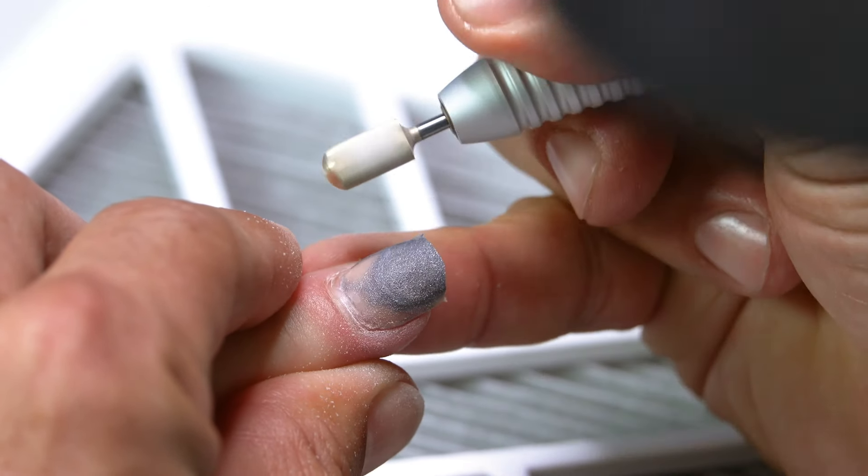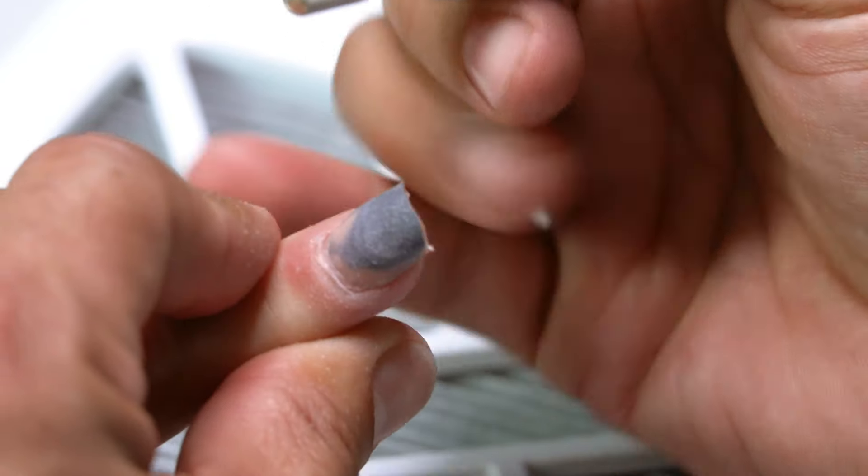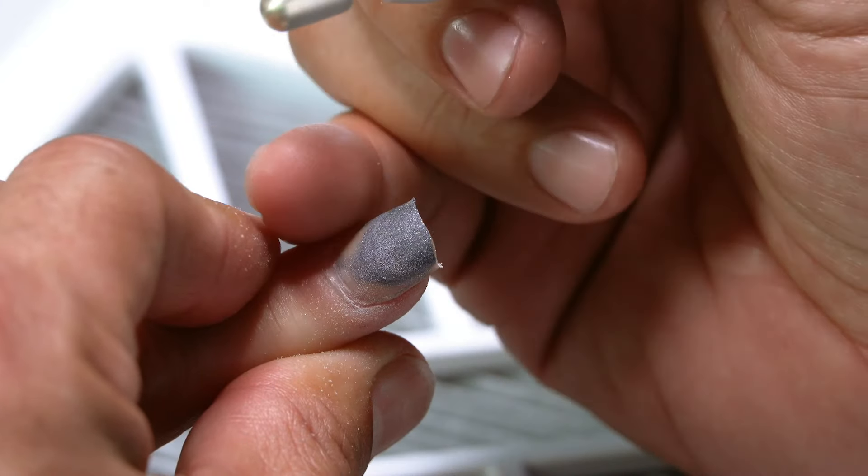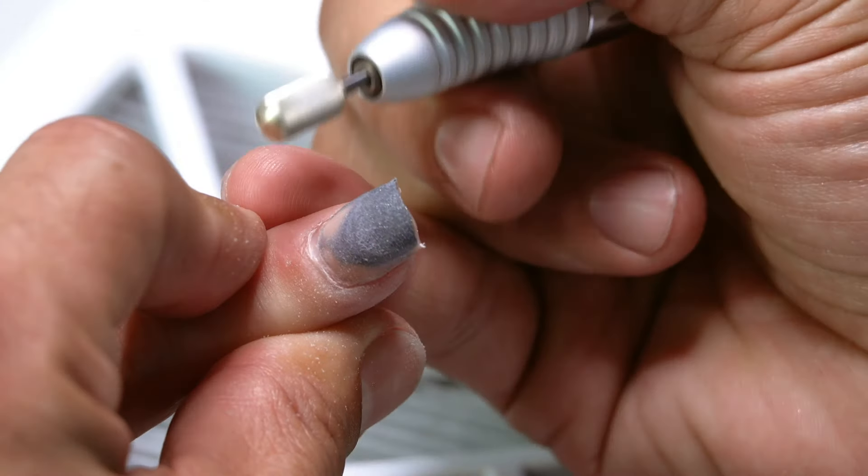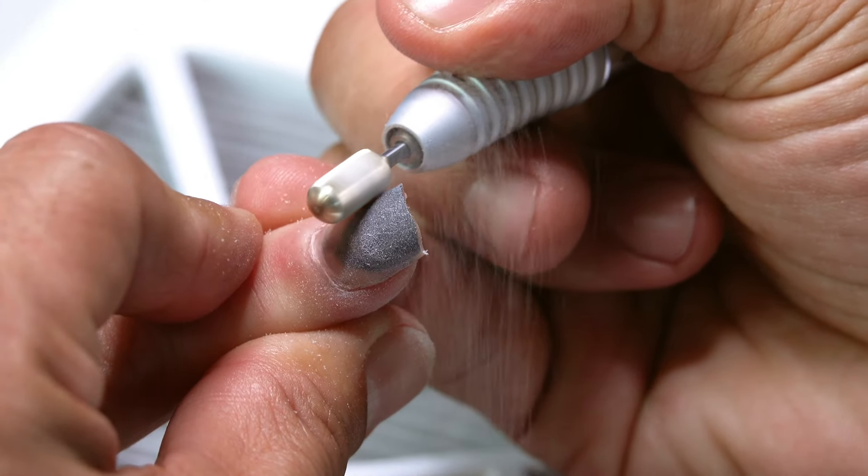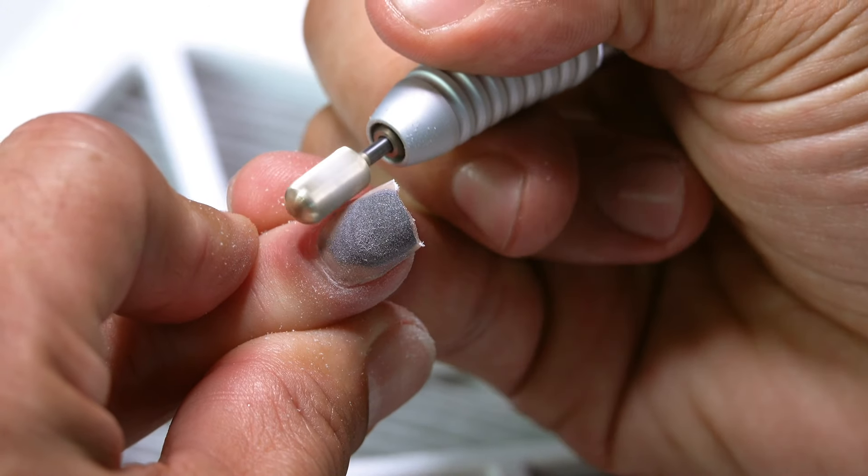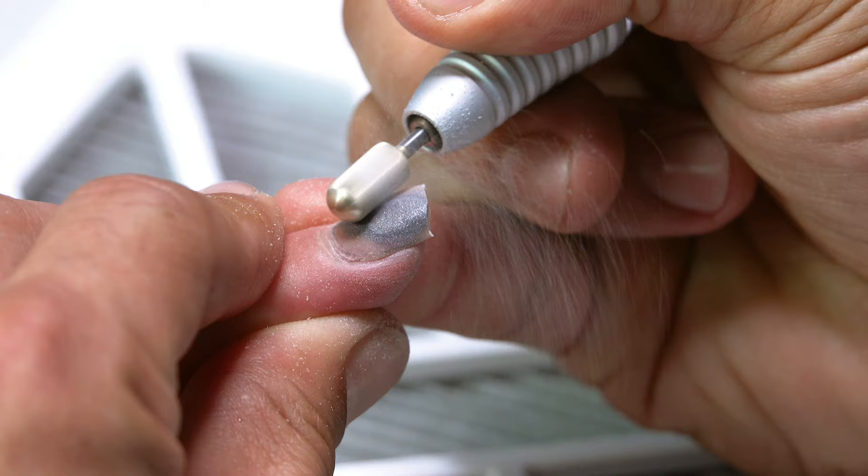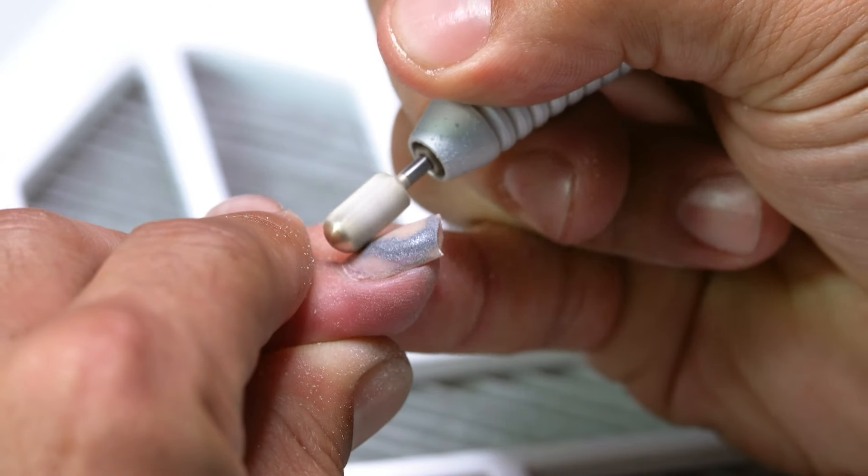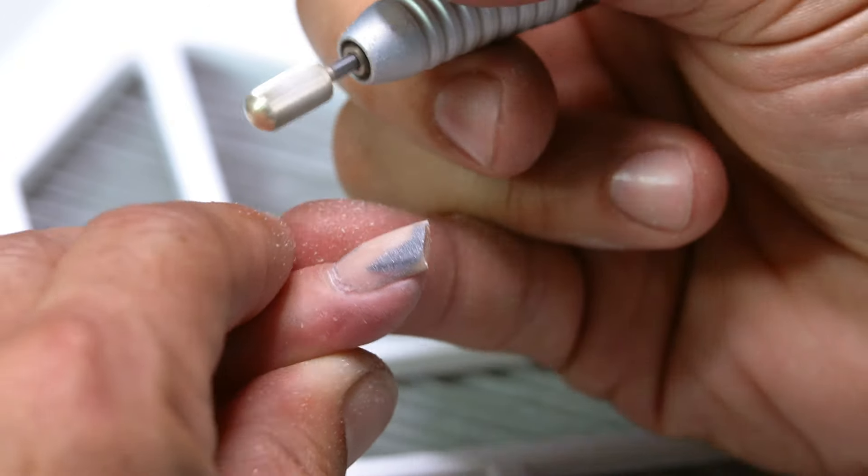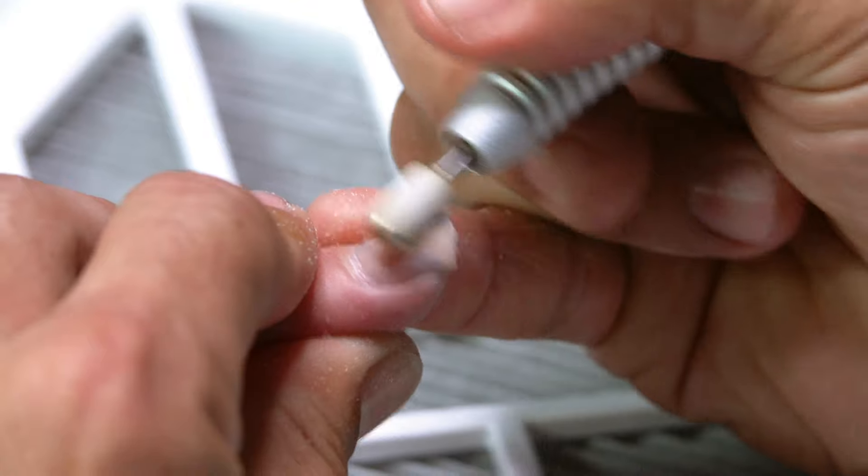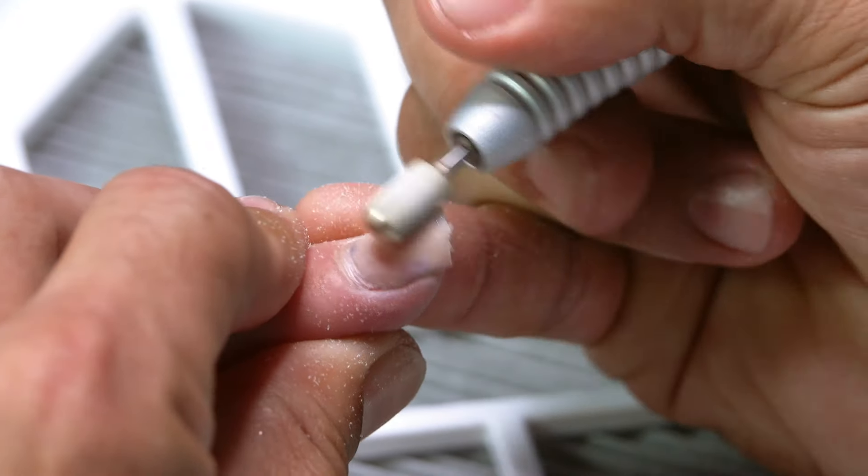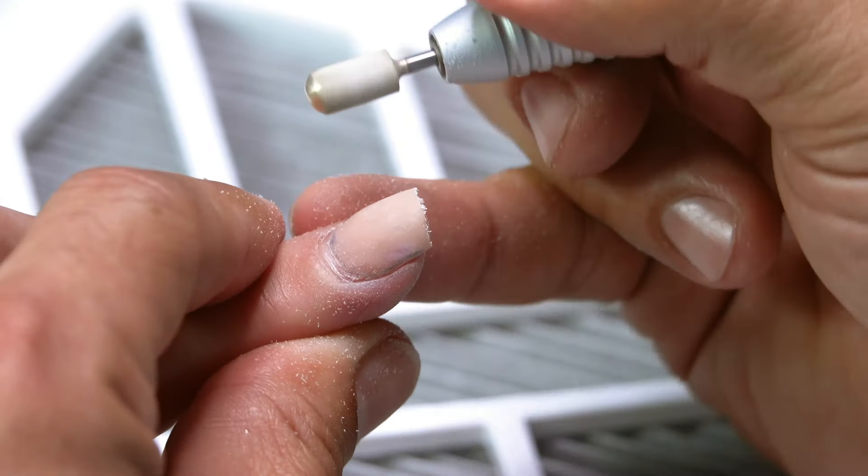So you can see as I'm working around the cuticle area, I'm not going side to side. Once I start working on the right side of the nail, I'm using zone three to pull towards myself. This is really going to help all of you guys out there that are starting, because you don't know how much pressure to use.